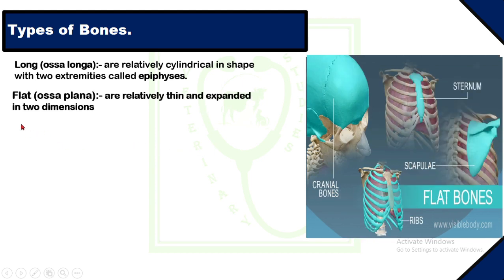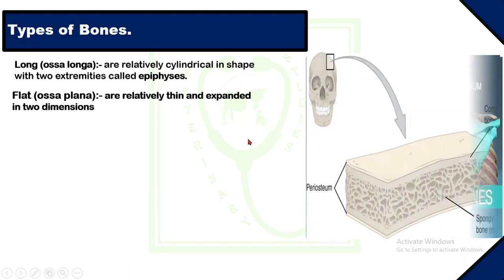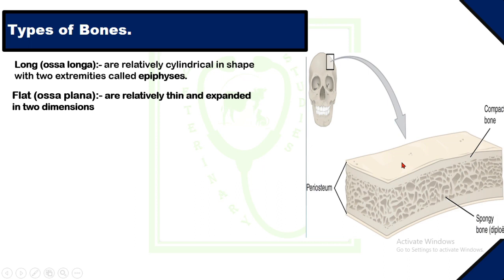Plate bones, or ossa plana, are relatively thin and expanded in two dimensions. These bones consist of two plates of compact substance — lamina externa and lamina interna — separated by diploë. Diploë is the spongy bone separating the inner and external laminae of the cortical bone of the skull. Plate bones include the bones of the skull, sternum, ribs, and pelvis. Their function is to protect internal organs.